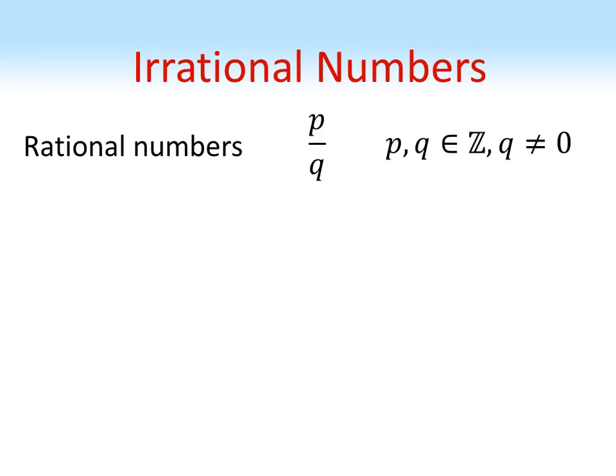Well, the rational numbers are all the numbers that can be expressed as a fraction of p over q where p and q are whole numbers and q isn't equal to zero.